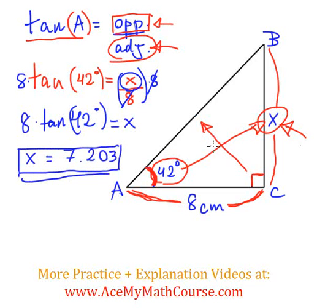And you could have found tangent of 42 first, then multiplied it by 8. Tangent of 42 is 0.9004. Once you multiply by 8, you get this answer we were looking for, the value of x. That's it.